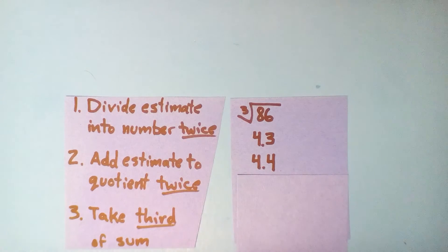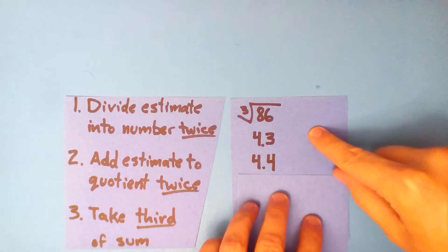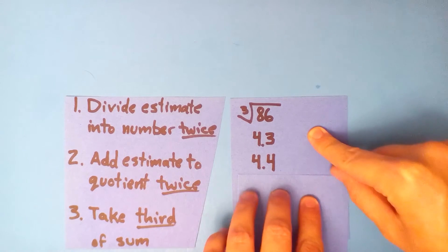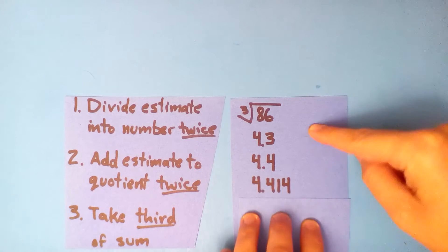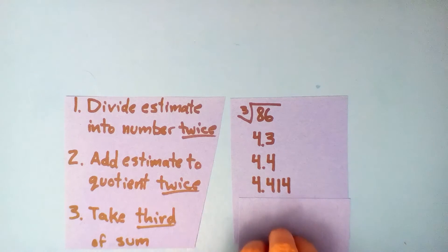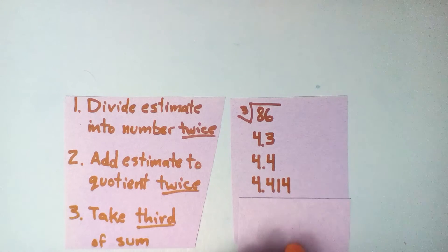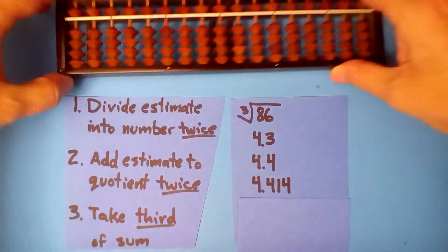After you divide by 3, you should have 4.414. Now let's do this one more time.